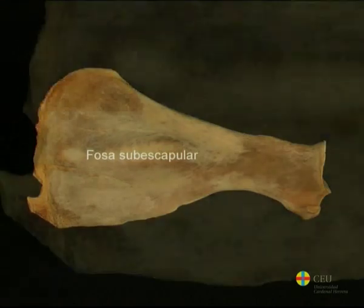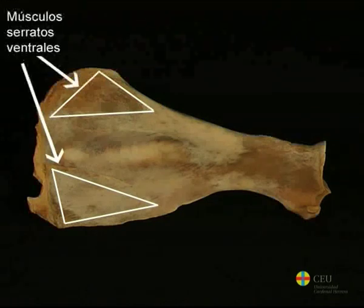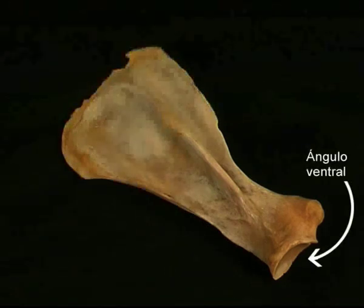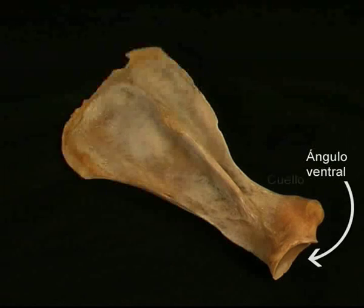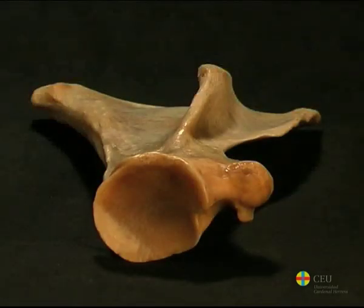In the dorsal part of this surface, there are two rough areas, the fascia serata or serrate surfaces, on which the ventral serrate muscles are inserted. Of the three angles of the scapula, it is the ventral one that presents anatomical details of greater interest. This angle, attached to the rest of the bone by the neck of the scapula, contains the glenoid cavity, a more or less oval surface which articulates with the head of the humerus.